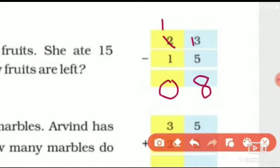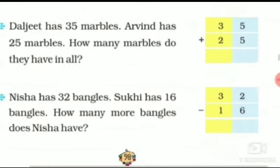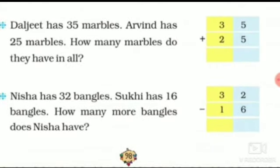Understood students? Now see the next sum. Daljit has 35 marbles. Daljit ke paas kitne marbles hai? 35. And Arvin has 25 marbles. Arvin ke paas 25 marbles hai. How many marbles do they have in all? We have to add both of them — hum ko find karna hai ke dono ke mila kar kitne marbles ho raha hai. Toh hum log dono ke marbles ko add kar denge.